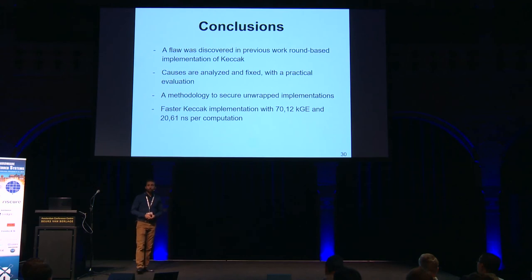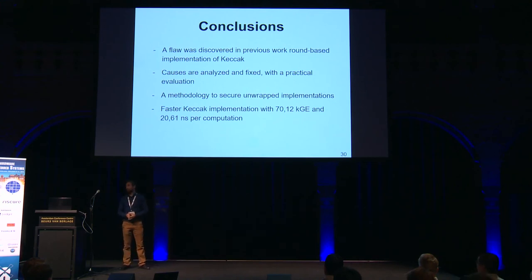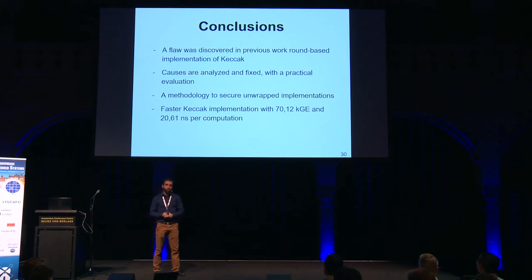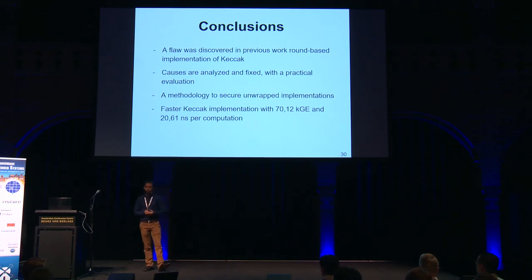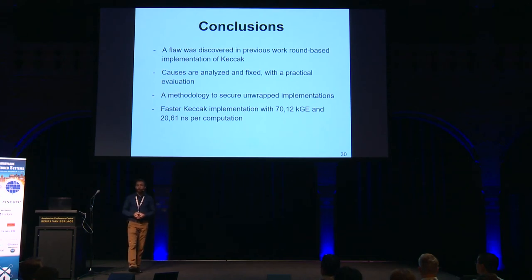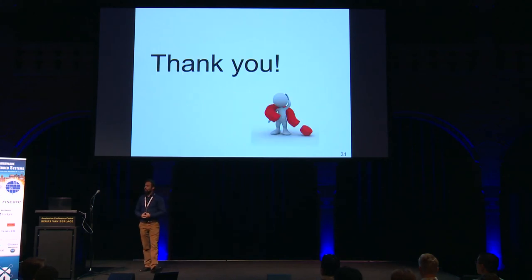To conclude, our contributions are: we discovered a flaw in previous round-based secure implementations of Keccak, proposed and analyzed a fix, and evaluated it practically. Second, we provide a methodology to secure unrolled implementations. Finally, we propose the fastest first-order secure Keccak known to date in the literature: 70K gate equivalents, computing in 20.61 nanoseconds. Thank you for listening, and I'm happy to answer questions.